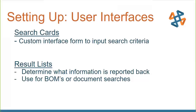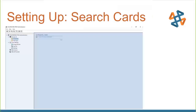Depending on what we want to search, if we have one group that only needs to see things like part numbers, descriptions, and revisions — for instance a sales group — we would have a result list that shows only that minimal information. If we have another group that needs to see much more information such as costing or lead time, we could have another result list set up just for that group, so we can display whatever information we need accordingly.